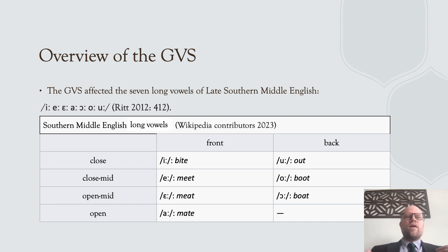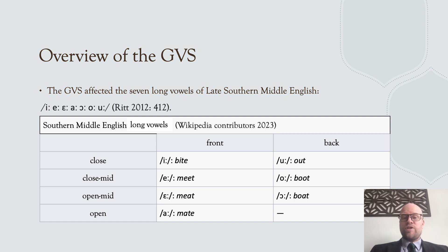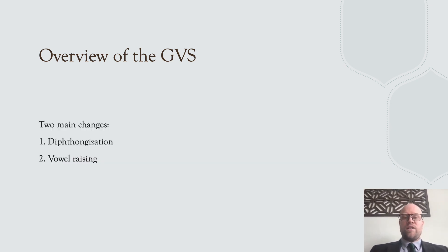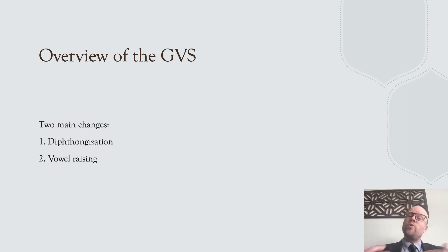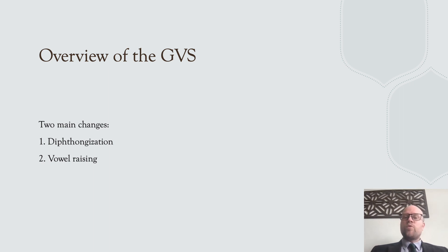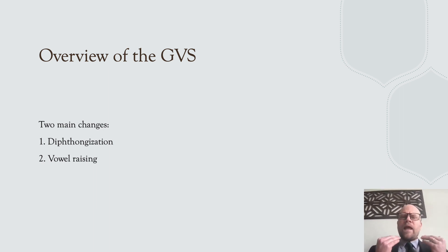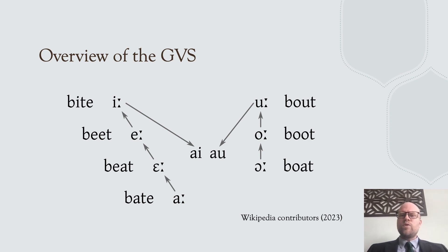The great vowel shift affected the long monophthongs. There are two main changes that happened: first, diphthongization — where vowels became diphthongs; and second, vowel raising — where the mouth becomes more closed and the tongue becomes more raised. Here is a quick overview of what happens, and then we'll go into the details.